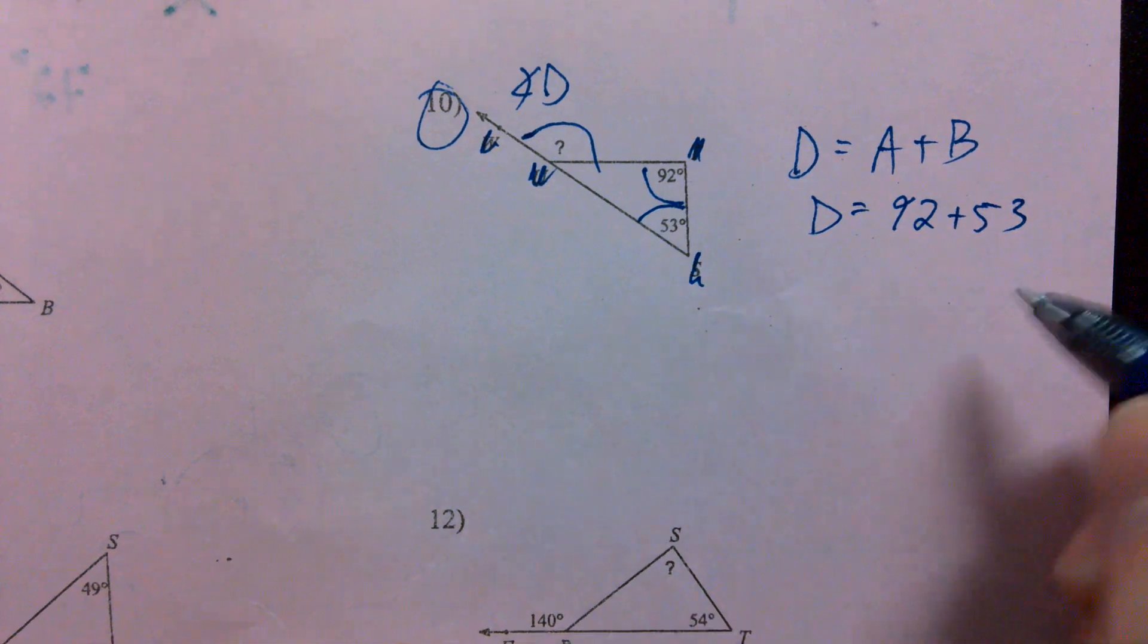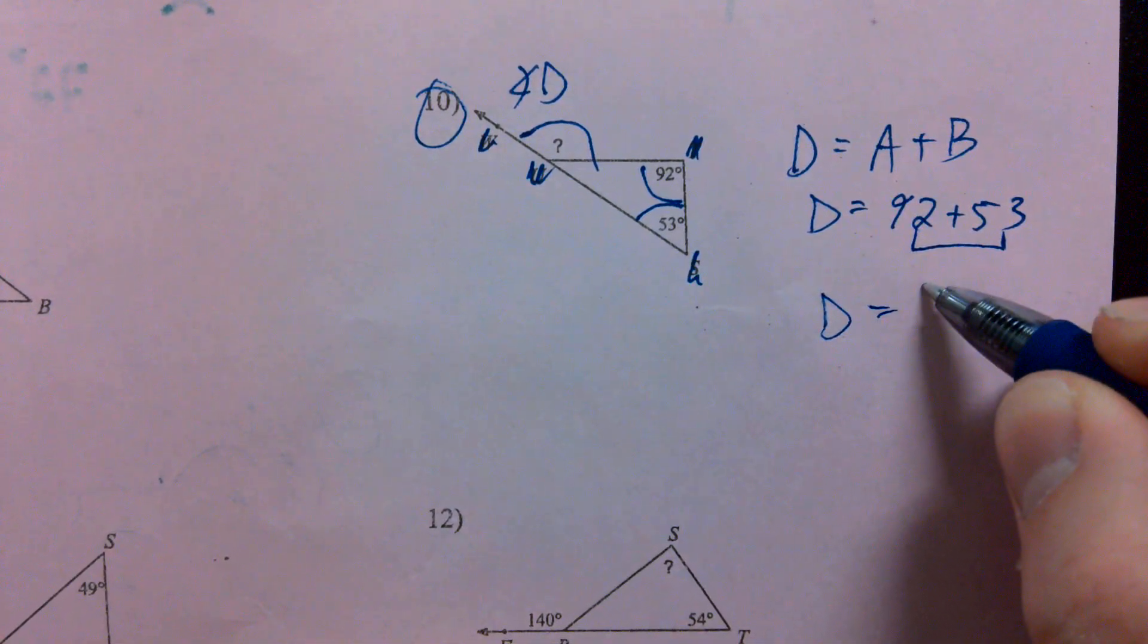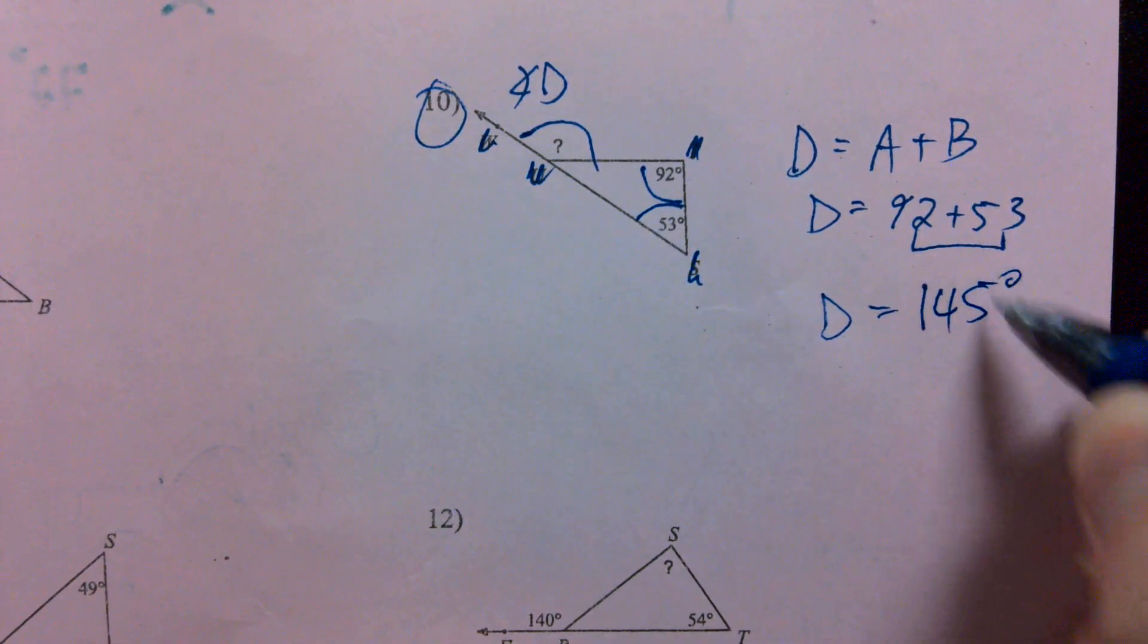What does 92 plus 53 give me? 145 degrees.